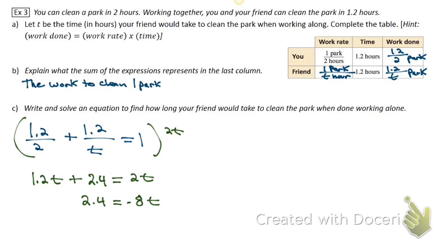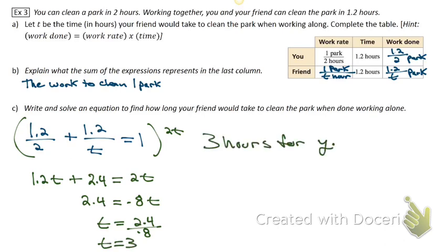You're going to multiply both sides by the common denominator, which is 2t. The 2 will cancel with the first fraction, the t will cancel with the second fraction, and nothing will cancel on the other side of the equation. It takes 3 hours.